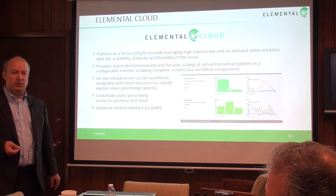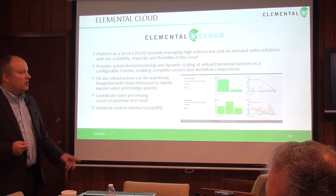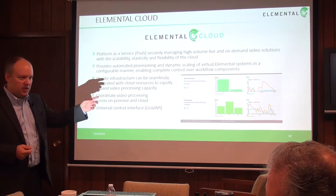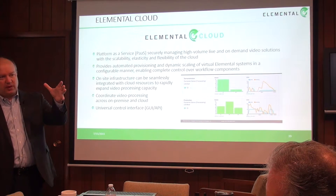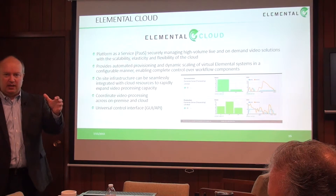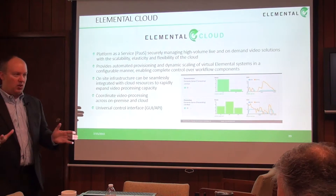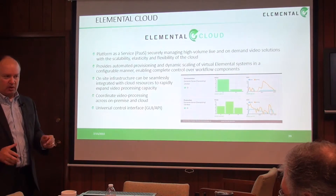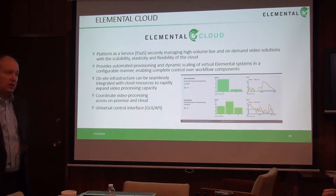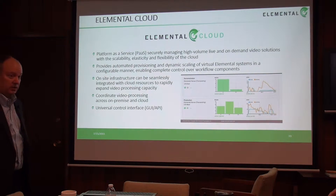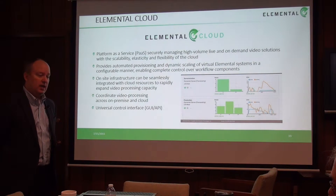If you have anything already in the workflow that can create an MPEG-4 RTP stream or an RTMP — which is a flash stream — we will give you the IP address to push that to. From there, you can ingest the video, create all the different ABR rates, push it to Delta, and do all the things we were talking about doing on the ground. You can also use it for transcoding — we can transcode in the cloud.